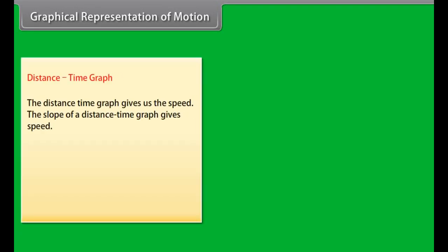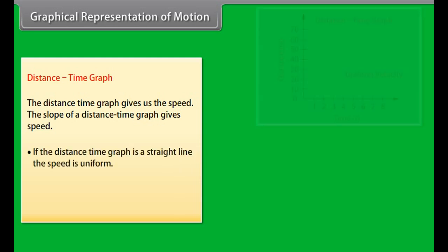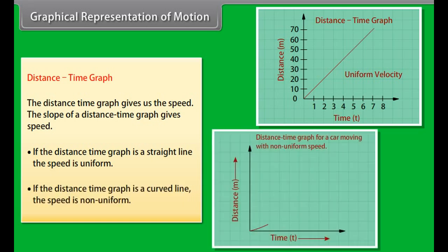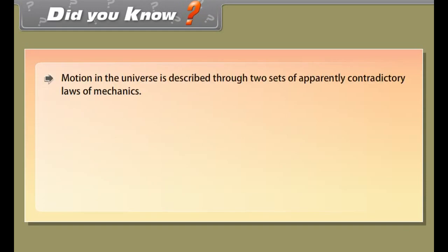Graphical representation of motion — Distance-Time graph: The distance-time graph gives us the speed. The slope of a distance-time graph gives speed. If the distance-time graph is a straight line, the speed is uniform. If the distance-time graph is a curved line, the speed is non-uniform.